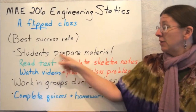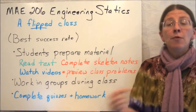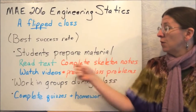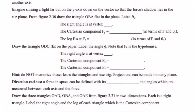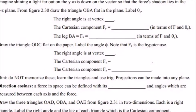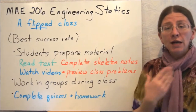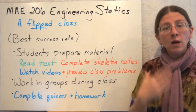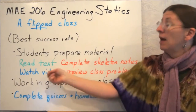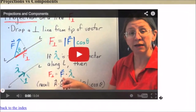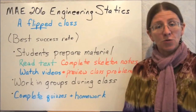A flipped class means that you prepare the material that you would get in a lecture before you come to class. So you're going to read the textbook, and then there are skeleton notes available in your course pack. These are blanks where you fill them in as you go along, to help you communicate with me about what's important — what I think you should have gotten out of that reading. Then there are videos like this one for you to watch every day, which would be the kind of lecture presentation.